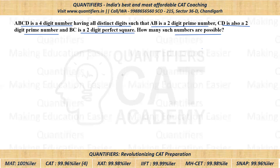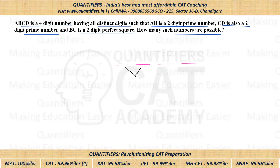Let me explain: we have a four-digit number with first digit A, second digit B, third digit C, and fourth digit D. AB is a two-digit prime number, CD is also a two-digit prime number, and the middle two digits BC form a perfect square. These are the conditions, and very importantly, all digits are different.